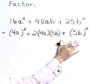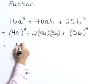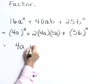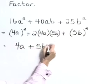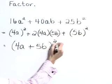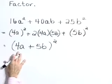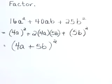So this is indeed a perfect square trinomial. Therefore, it's going to factor as 4a plus 5b quantity squared. Our completely factored form is 4a plus 5b quantity squared.